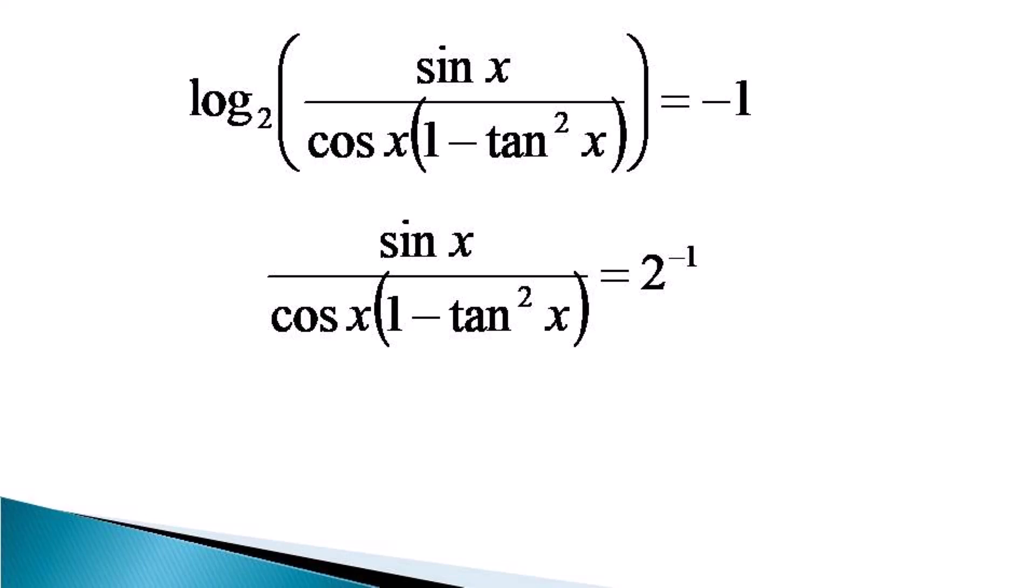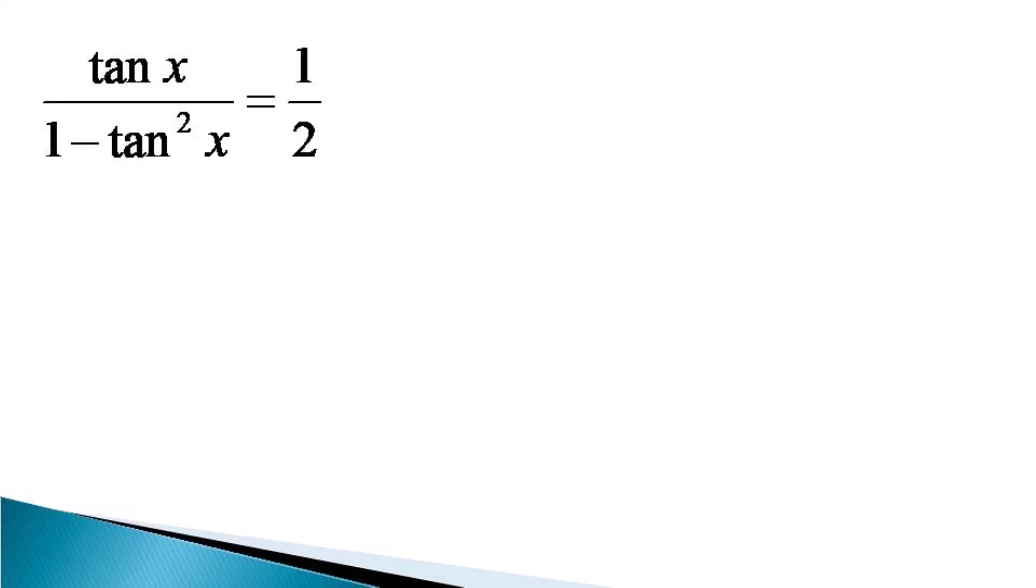Now sin x by cos x is tan x. So the equation transforms to tan x by 1 minus tan²x equals 1 by 2, and cross multiplication gives 2 tan x by 1 minus tan²x, which is tan 2x.